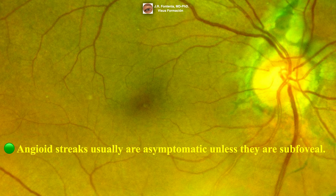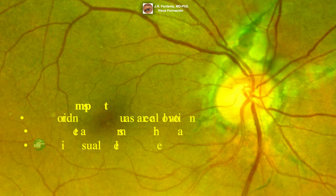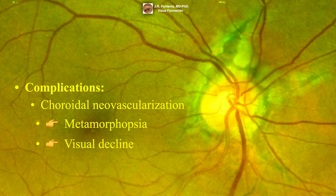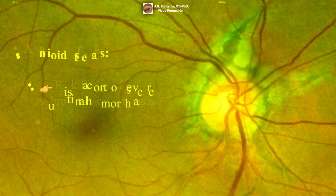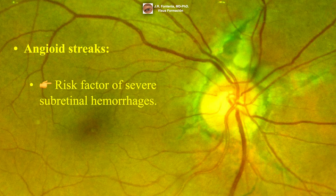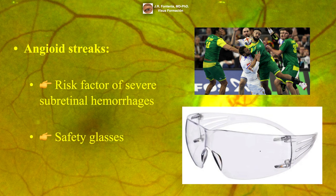Angioid streaks are usually asymptomatic unless they are subfoveal. Complications include choroidal neovascularization, causing metamorphopsia and/or visual decline. Angioid streaks are also a risk factor for severe subretinal hemorrhages due to rupture of Bruch's membrane following relatively mild ocular injury. Safety glasses are advisable as patients can be highly susceptible to choroidal rupture following even minor blunt injury.